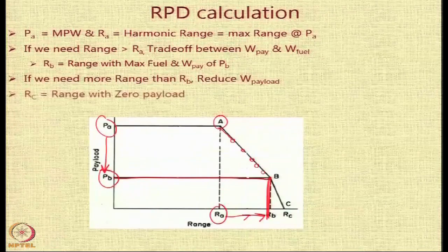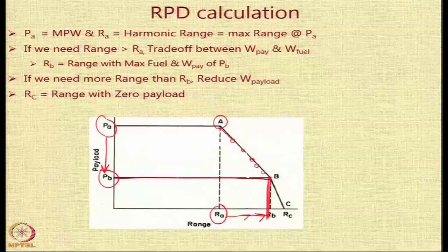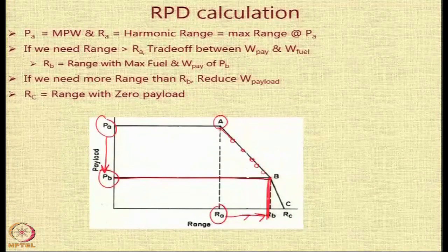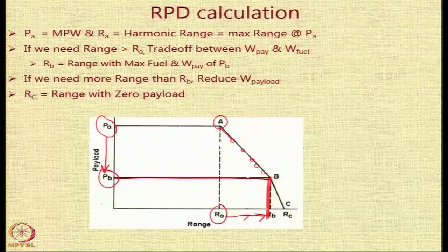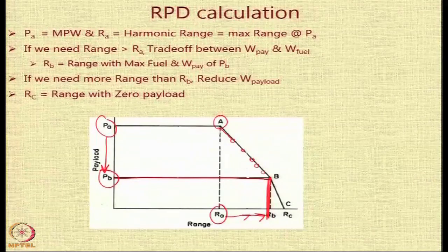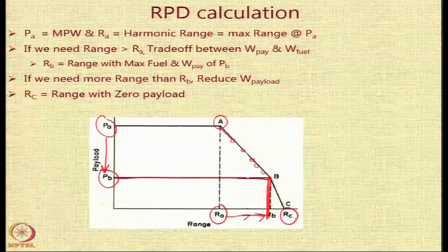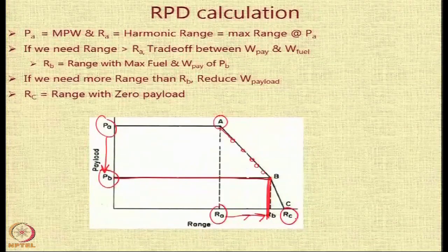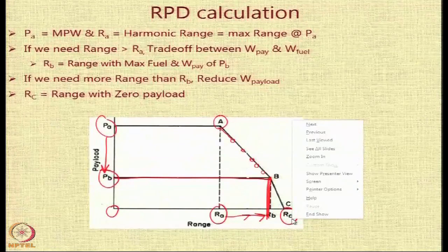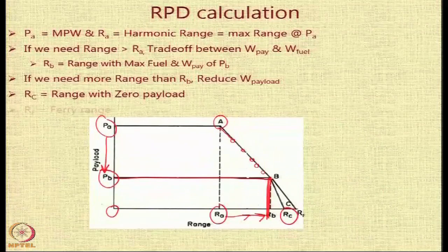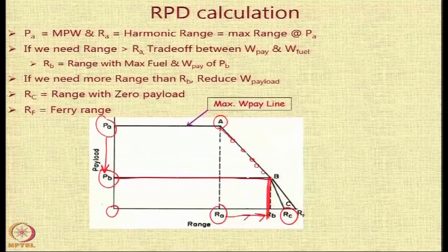RB is the range achievable with lower payload — PA reduces to PB but RA increases to RB. If we need more range than RB, we reduce payload W further. In many cases this segment is a straight line because you cannot do much further, and the effect of the aircraft being lighter is not really manifested significantly. RC is a theoretical point corresponding to the ferry range, where the entire reserve fuel is also used as mission fuel and payload is zero.